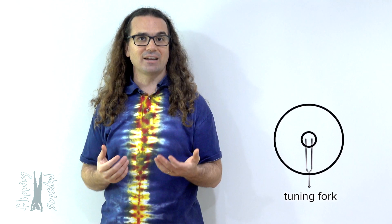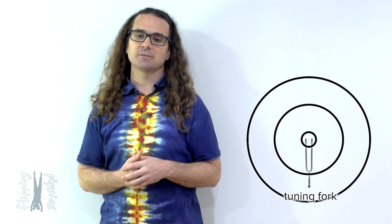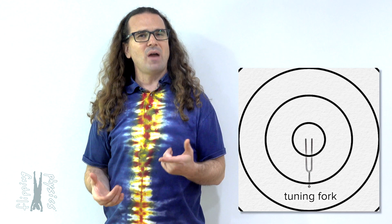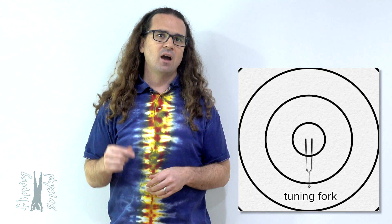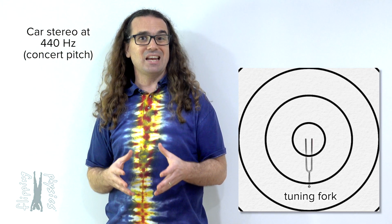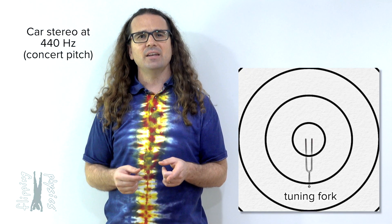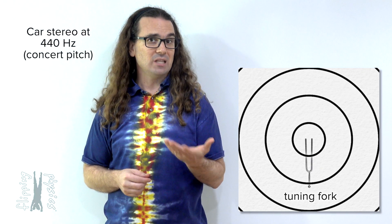So it starts by recalling what this animation of a stationary sound source actually represents. Rather than using the car horn, let's switch to a constant 440 hertz frequency being played on the speakers of the car stereo. That is the 440 hertz concert pitch which we used last time.